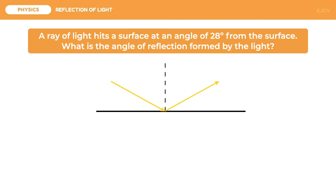This is the crucial part: we need to identify what angle is 28 degrees. As mentioned in the problem, the 28 degrees is measured from the surface. Since what we need is the angle of incidence which is measured from the normal, we need to find this angle. Since the normal line is perpendicular to the surface, it forms a 90-degree angle, and the sum of the two angles formed by the rays is always 90. To solve for the incident angle, we subtract the angle from the surface from 90 degrees.